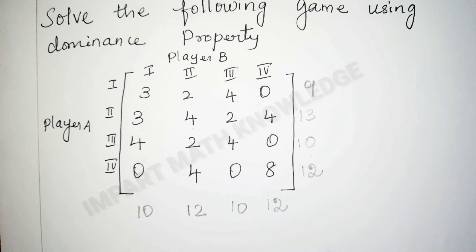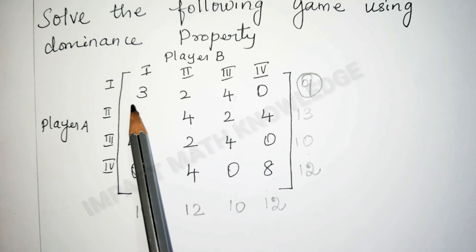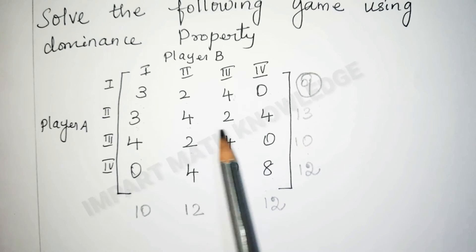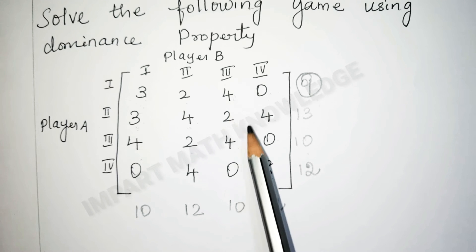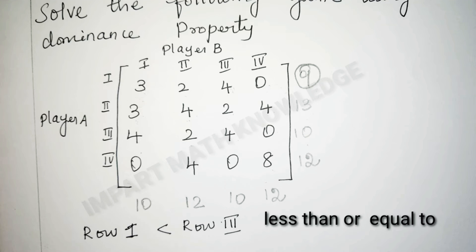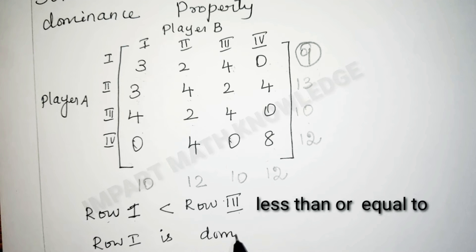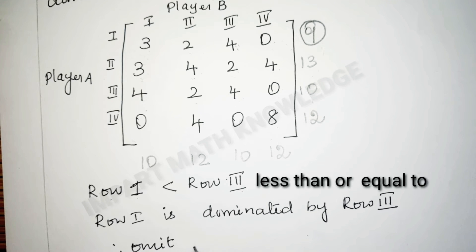In the row total, select the minimum value, which is 9. Compare the first row with the second row: 3 equals 3, 2 is less than 4, but 4 is greater than 2, so no dominance. Now compare the first row with the third row: 3 is less than 4, 2 equals 2, 4 equals 4, and 0 equals 0 — all allowed. So row 1 is dominated by row 3. Therefore, omit row 1.